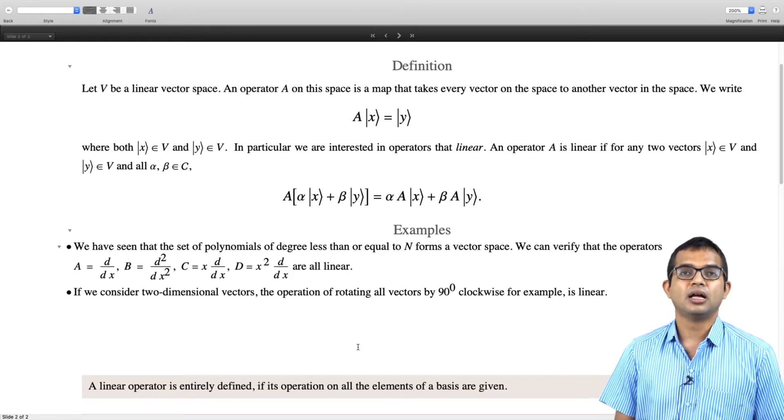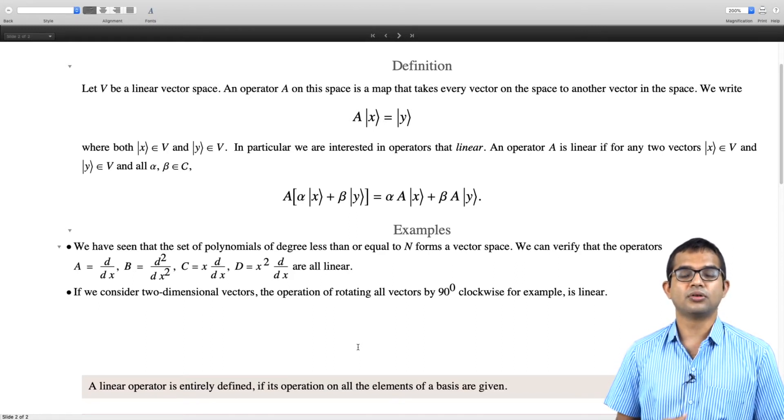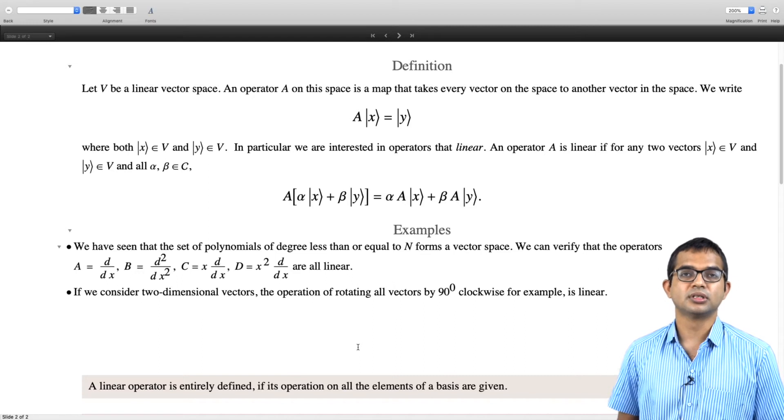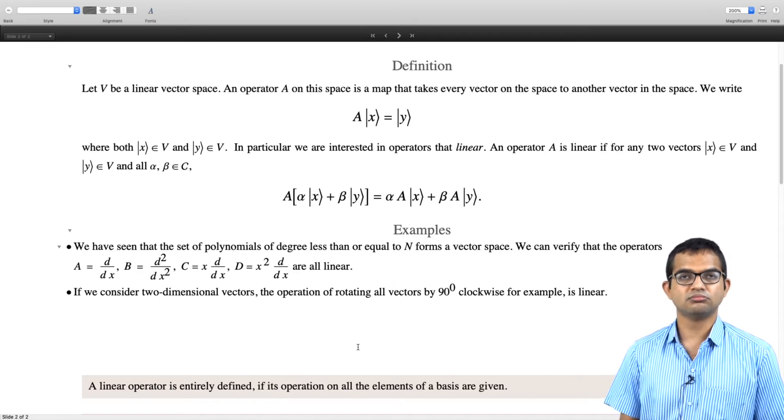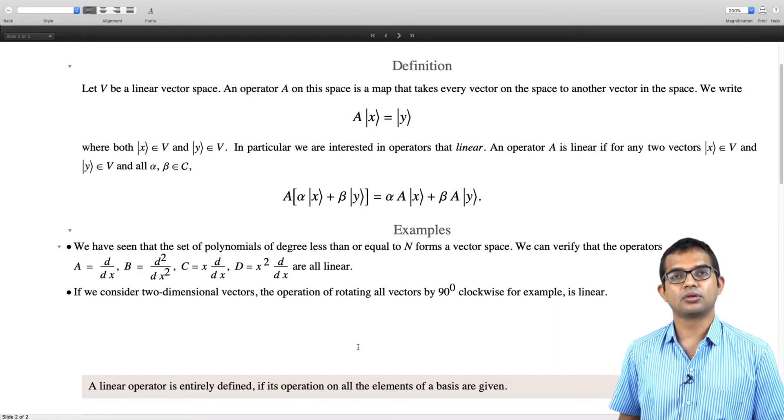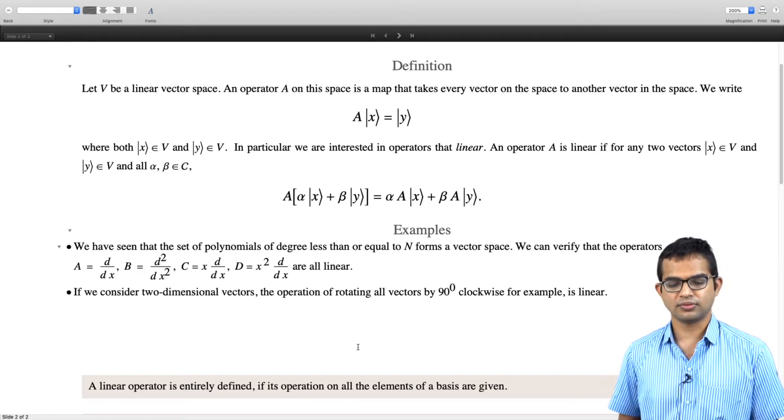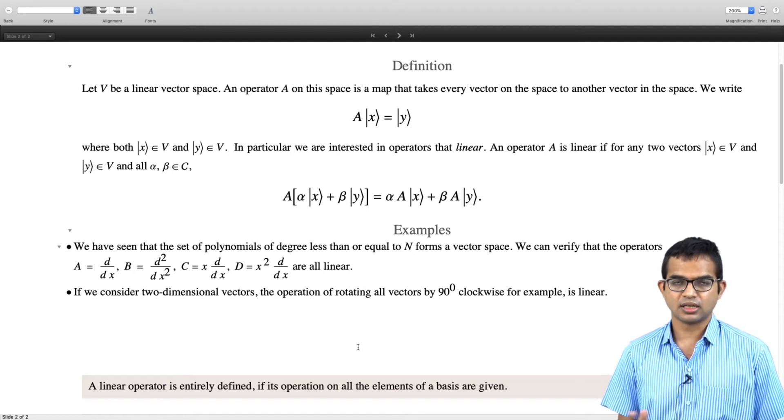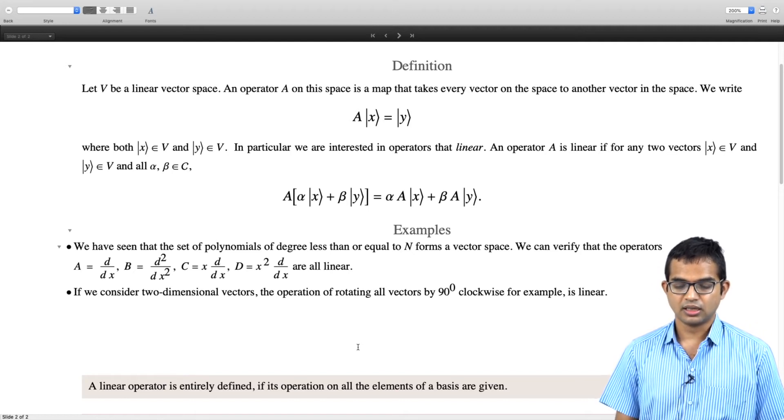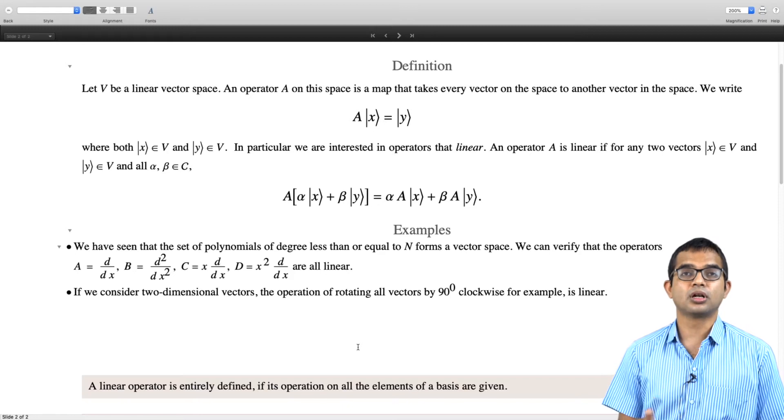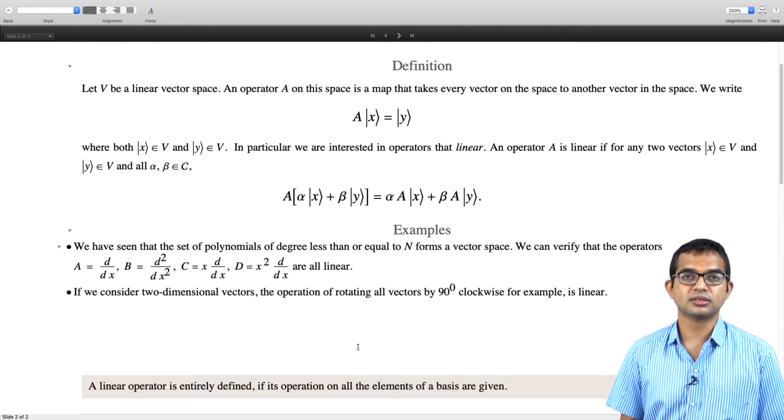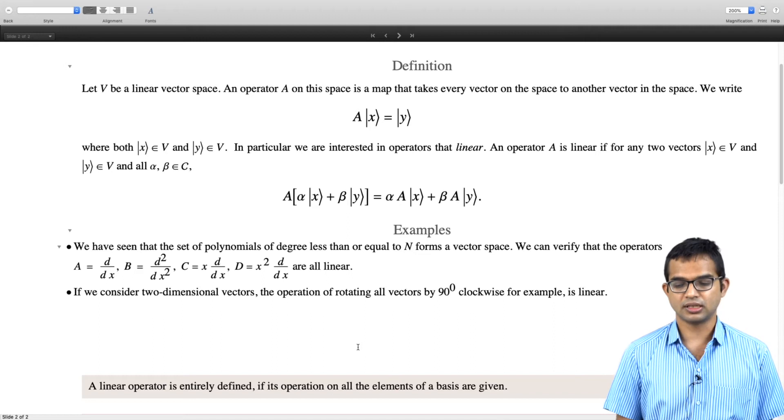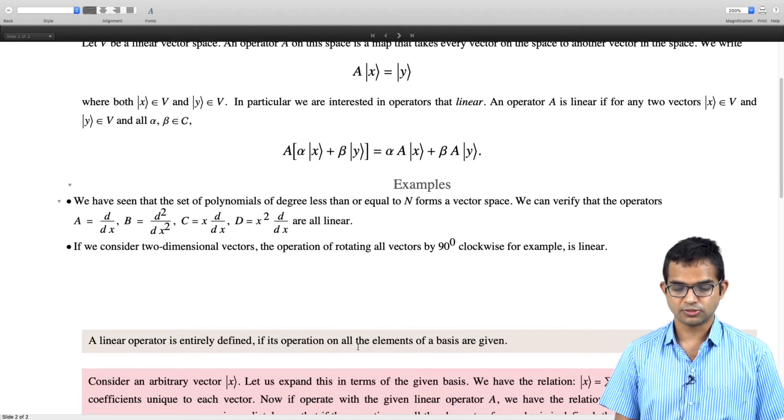A linear operator is entirely defined if its operation on all the elements of a basis are given. We have seen that a basis consists of a bunch of elements and each of them contributes a non-trivial amount of information. It is convenient to have an orthonormal basis, but in general a basis does not have to be orthonormal. The total number of elements in a basis is fixed for a given vector space and it is equal to the dimension of the space.